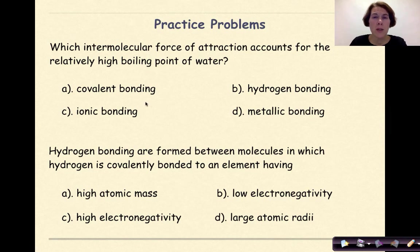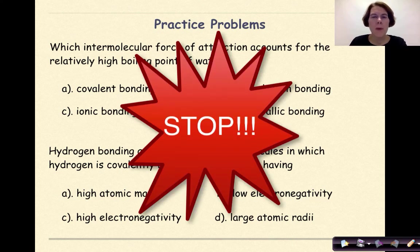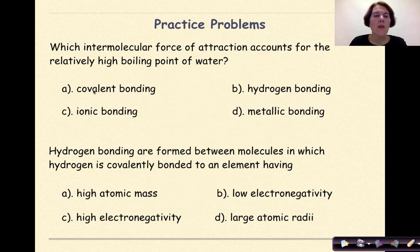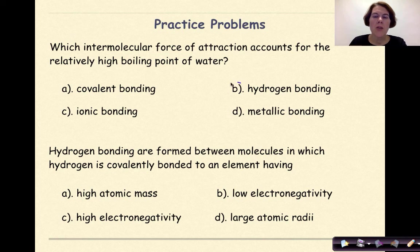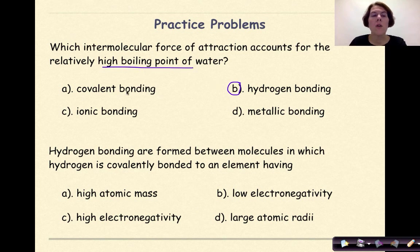Now let's try some practice problems. Which intermolecular force of attraction accounts for the relatively high boiling point of water? The answer choices are covalent bonding, hydrogen bonding, ionic bonding, and metallic bonding. The only possible answer is hydrogen bonding, because hydrogen bonding is directly responsible for the high boiling point of water. Also, covalent, ionic, and metallic are all intramolecular forces — hydrogen bonding is the only intermolecular force listed.